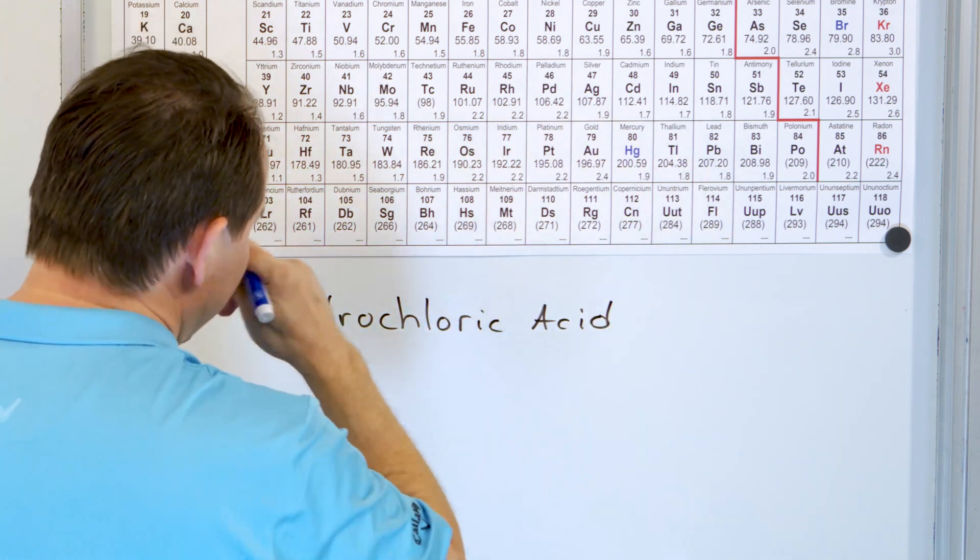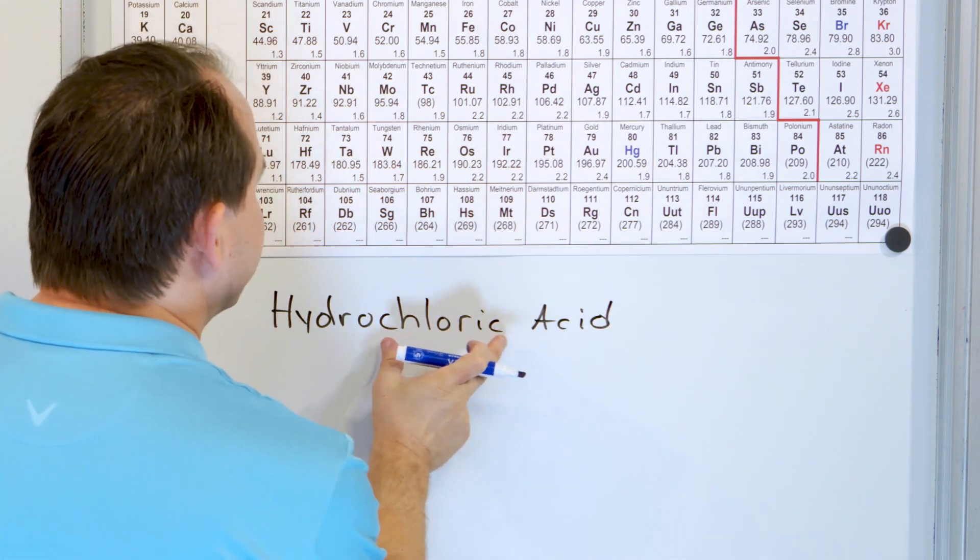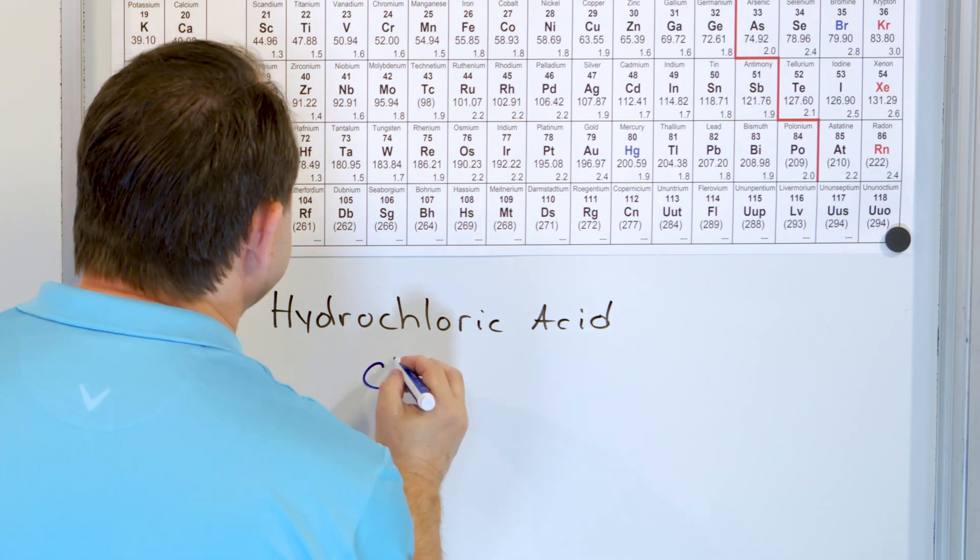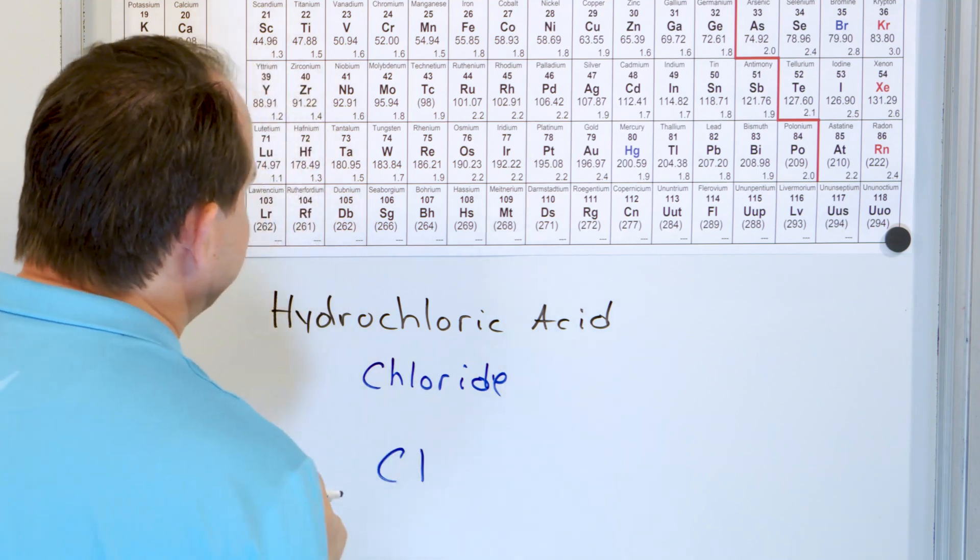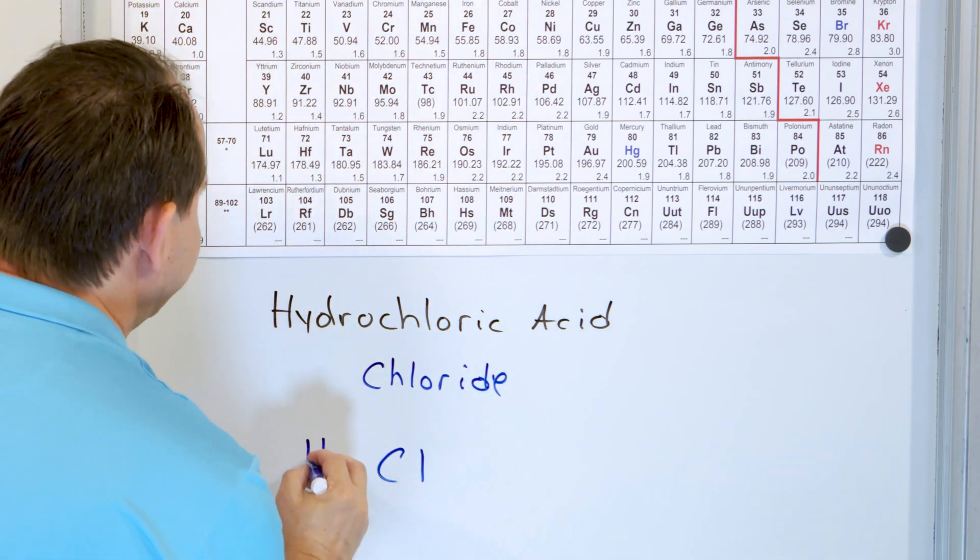First of all, it's hydro something acid. So it goes based on this, which is chloric, which means chlorine chloride, which means Cl is the anion. And of course, the hydrogen here as well.